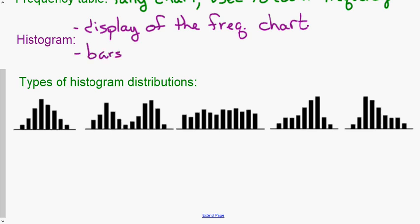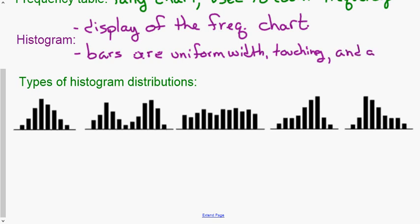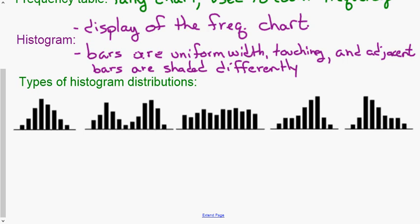What we need to know is that the bars are uniform width and touching. Adjacent — a math term for next to — means bars that are next to each other, so adjacent bars are shaded differently. Any two bars that are touching are our definition of adjacent.